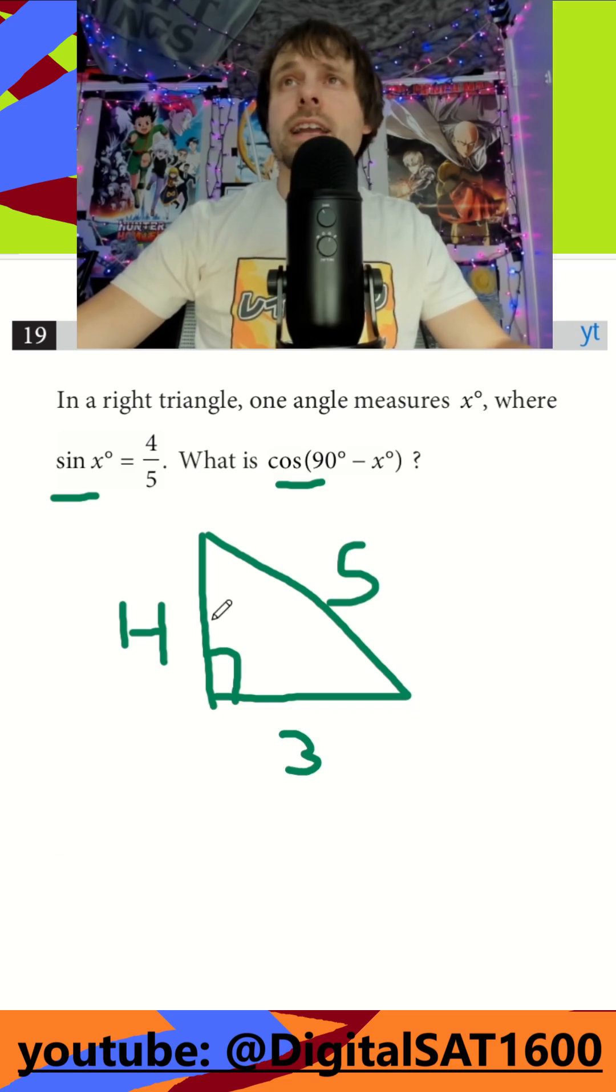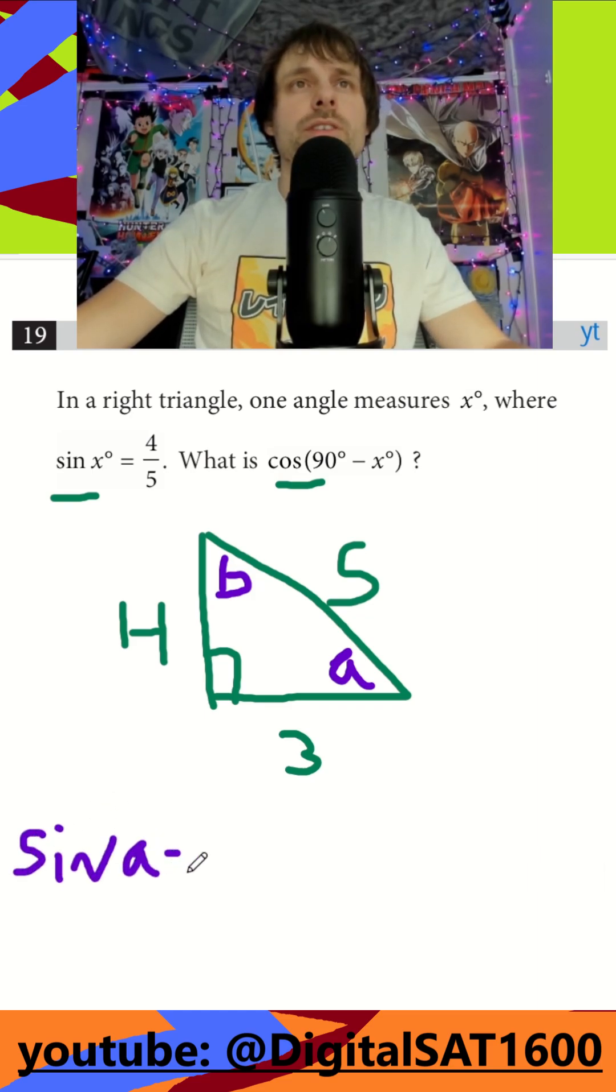And let's just take the sine of one of our angles, right? We'll call this A, and this guy B, and we'll say sine of A. And remember, so SOHCAHTOA rules, sine of A is going to equal my opposite over my hypotenuse, so it's going to be 4 fifths.